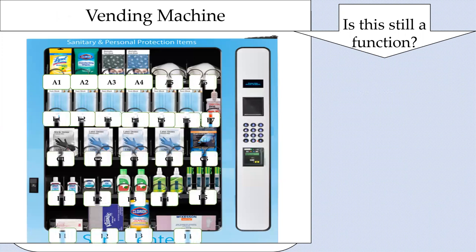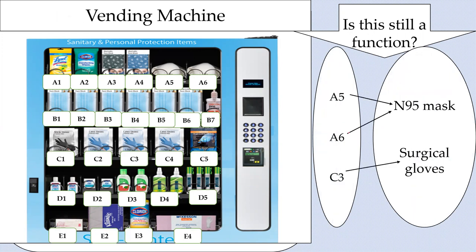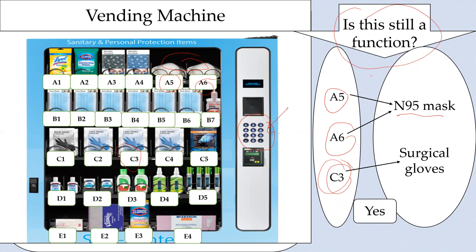Now, what if you have a presentation like this — is it a function also? You have codes A5, A6, and C3. When you check A5 and A6, they both give you an N95 mask. And if you encode C3, you get surgical gloves. Is this still a function? The answer is still yes. I will not explain yet why it's a function because later I'm going to define what a function really is. For now, I'll just use the vending machine as an example for you to easily understand the concept of a function.